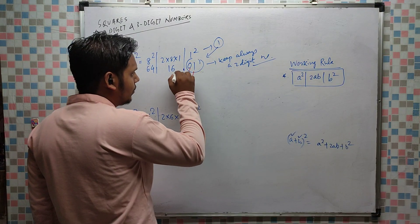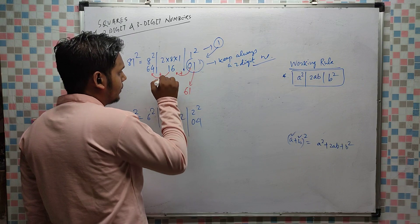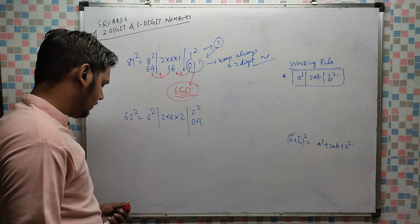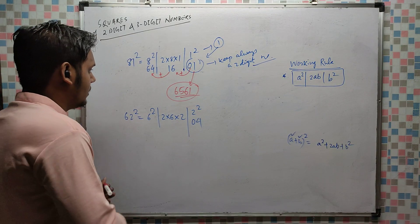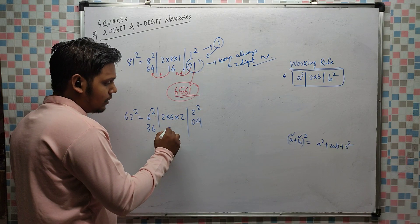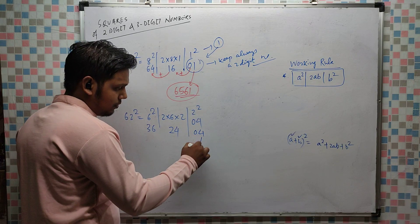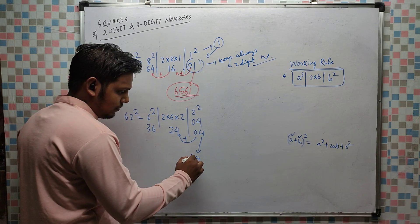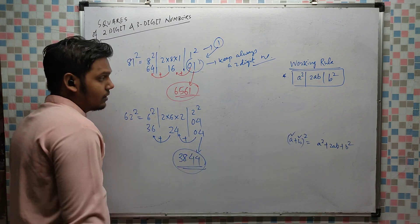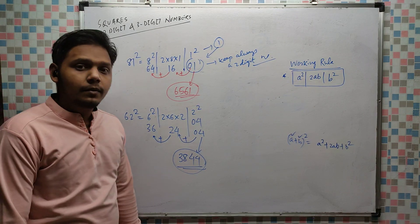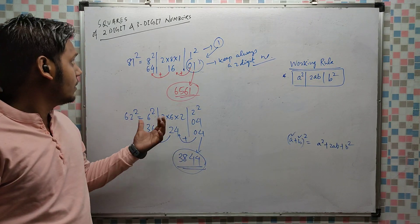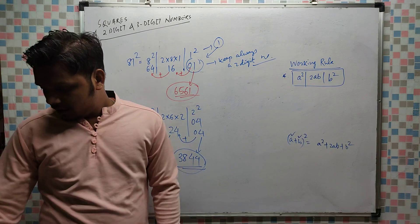Continuing 62²: balance: write 4, 0 adds with 4 giving 4, 1 adds with 64 — wait, let me redo: 36, 24, 04. Drop 4, 0 adds with 4 gives 4, 2 adds with 6 gives 8, and 3 remains giving 38. Answer is 3844. By using the formula a² + 2ab + b² you can get the value easily without full multiplication — you only need to know up to 9².